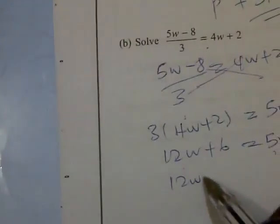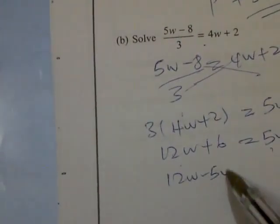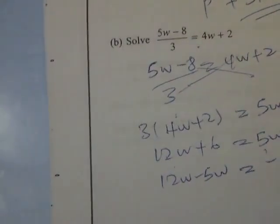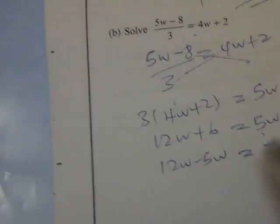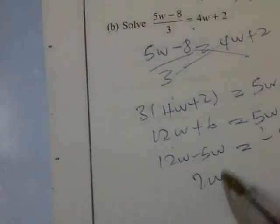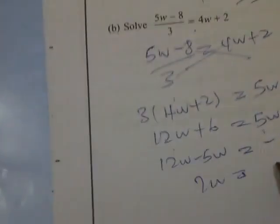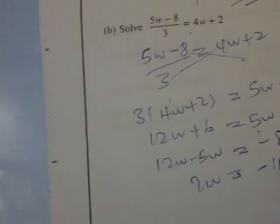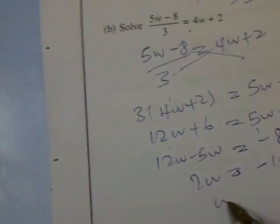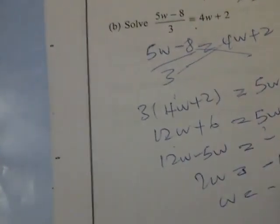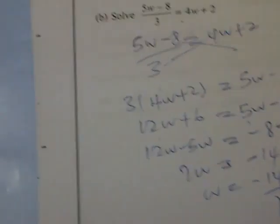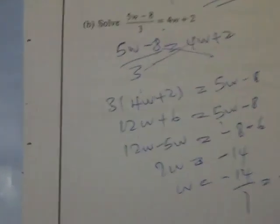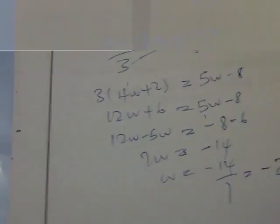This is going to be 12w minus 5w equal to minus 8 minus 6. So 7w equal to minus 14, w will be minus 14 over 7, and that will be minus 2. So that is w for part b.